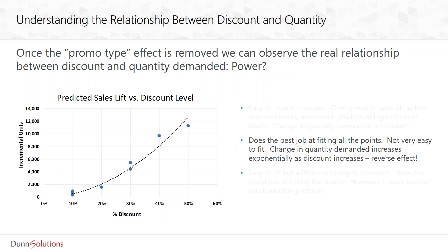What about a power function? This model does the best job of fitting all the historical points. It's not a very simple model to fit, but it does a pretty good job. The problem is it shows the reverse effect of what we would expect — we know that after a certain point, sales will flatten out, growing at a decreasing rate because there's only so much you can buy. But if you were to generalize this model to 60% or 70% discount, it would keep predicting sales at an increasing level. So this is not a good fit either, and using this kind of model can be really costly.